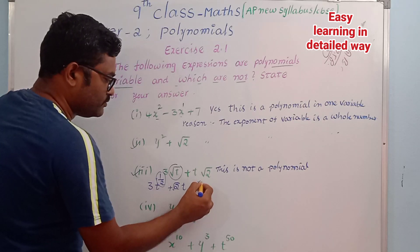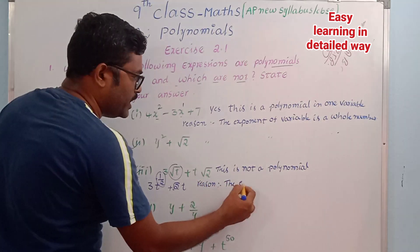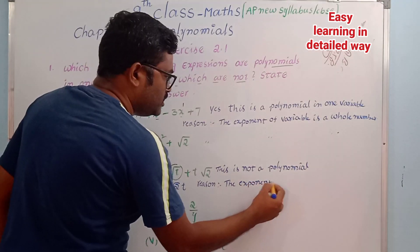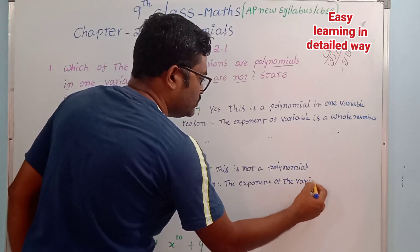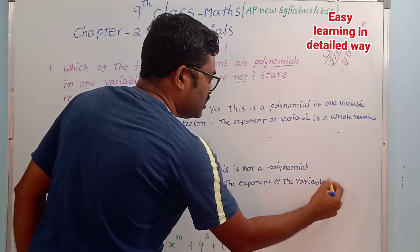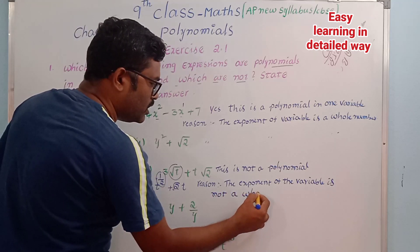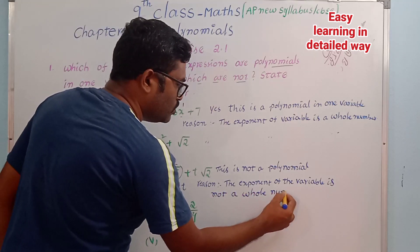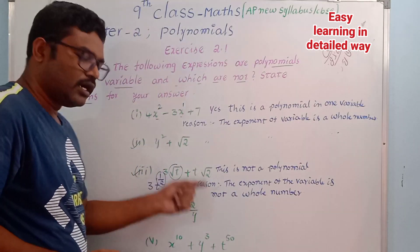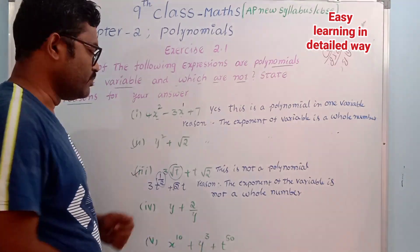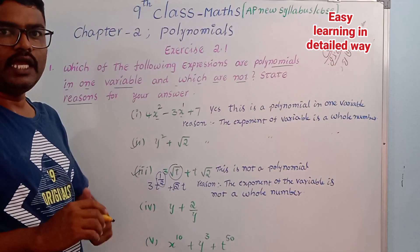The reason is that the exponent of the variable is not a whole number — it is a rational number (1/2). That is why the third expression is not a polynomial.